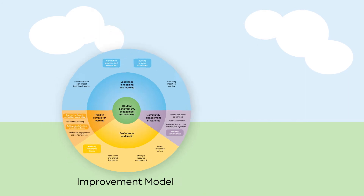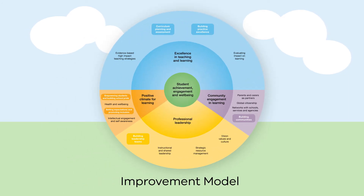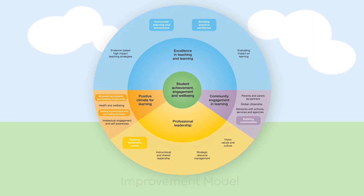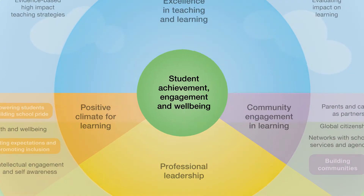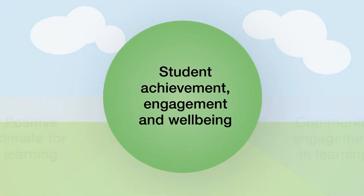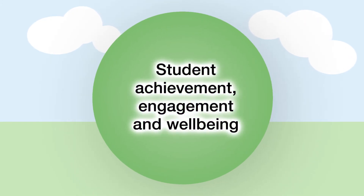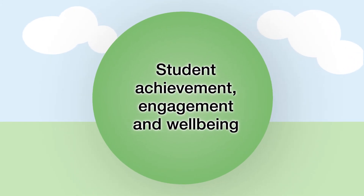The model identifies the priority areas that are known to improve student outcomes. At the centre of the model is student achievement, engagement and well-being. This is at the centre of everything we do.